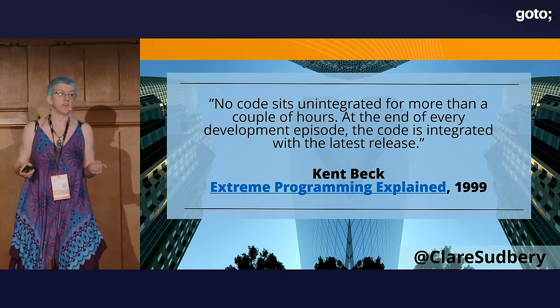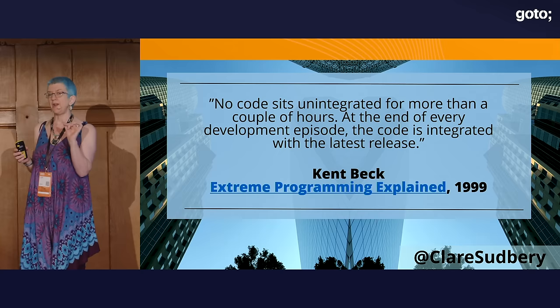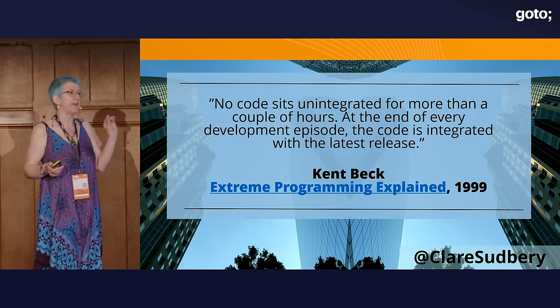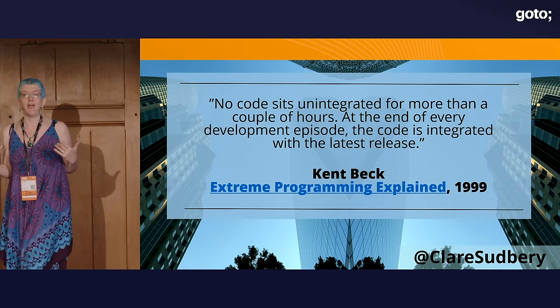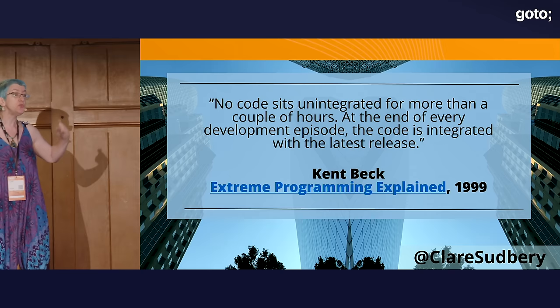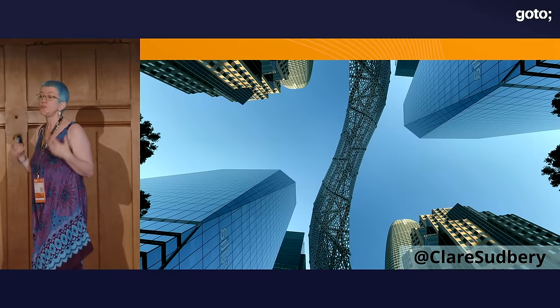But now we have CI servers, and quite frequently — I would even say typically — those CI servers are working off a feature branch, not off the main branch. So you're not integrating your code with the rest of your colleagues. Even if you're constantly pulling from the main branch into your feature branch, unless all your colleagues are pushing from their branches to main, you are not merging with their code. So you're not doing continuous integration.